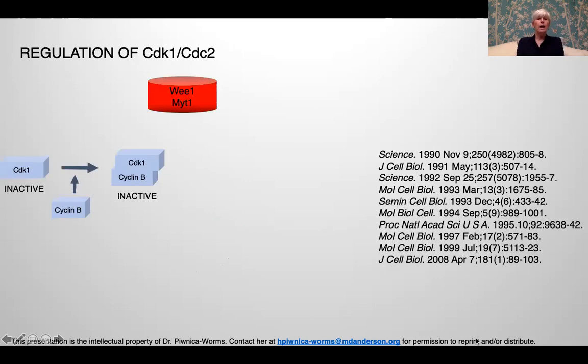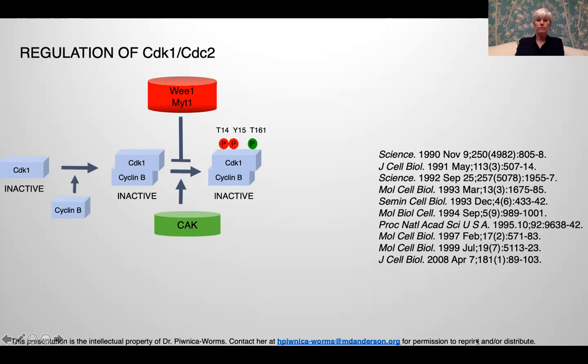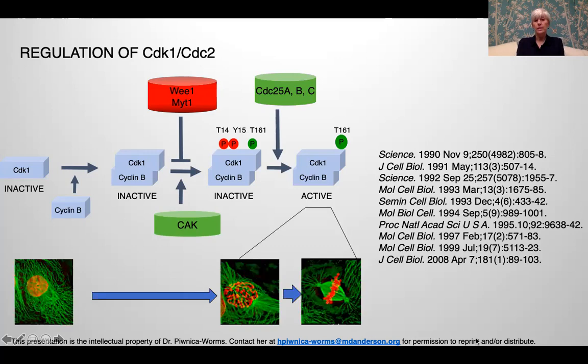Putting this pathway together: the CDK1-cyclin B complex is acted on by three protein kinases — WEE1, MYT1, and CAK. WEE1 and MYT1 regulate threonine 14 and tyrosine 15 phosphorylation. CAK, the CDK-activating kinase, phosphorylates CDK1 on threonine 161. This is the form of the complex that accumulates throughout the S and G2 phases of the cell cycle — it's inactive. It's the CDC25s that then dephosphorylate those inhibitory residues to generate the active form that ultimately drives cells into mitosis.